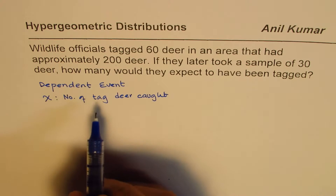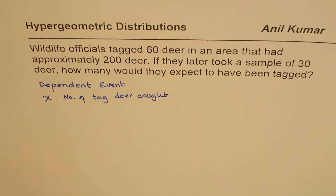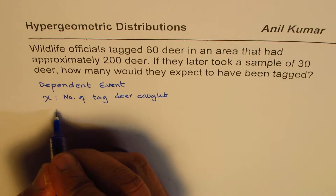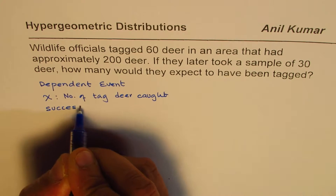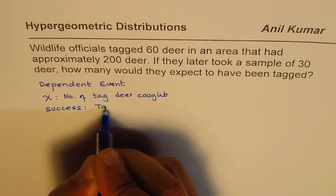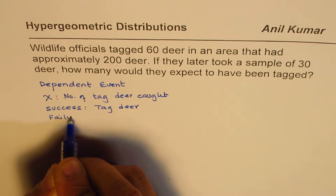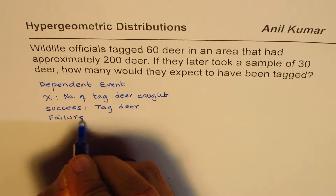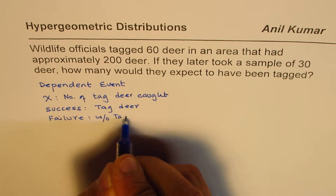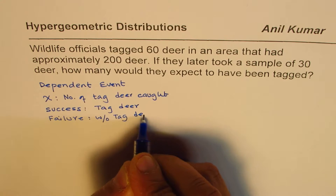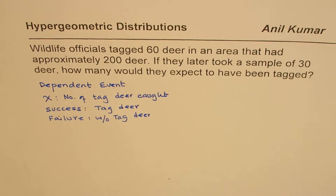If a deer which is caught has been tagged, it is a success. So success here will be treated as tagged deer — a deer with a tag — and failure will be without tag. Whenever you catch a deer, it could have been tagged already or not, so there are only two possibilities. This is clearly a case of hypergeometric distribution.